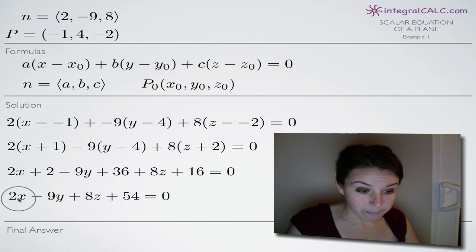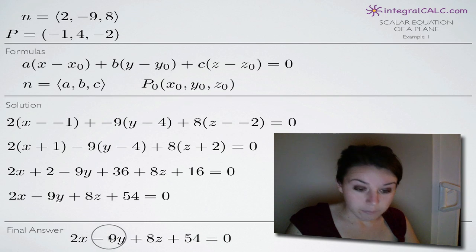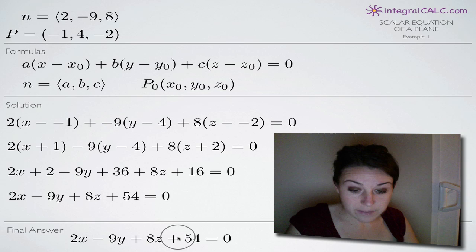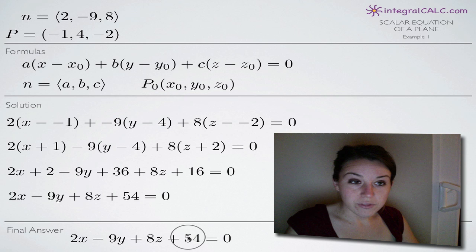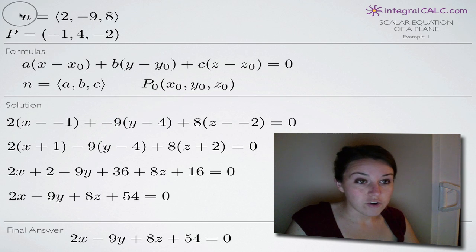We're going to arrange those in that order at the front of our equation with the constants at the end. So when all is said and done, we end up with this as our final answer. It's going to be 2x - 9y + 8z + 54 = 0. And that is our scalar equation of the plane given this normal vector n and the point P.